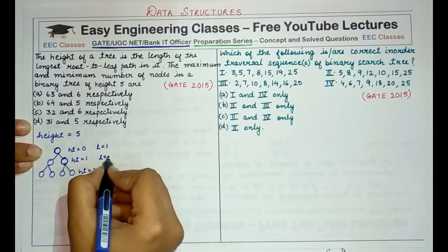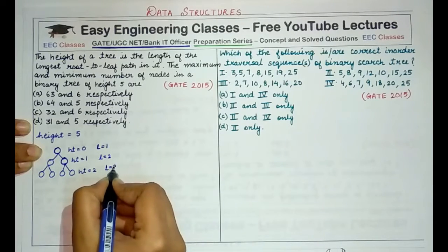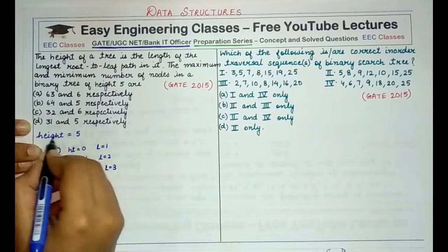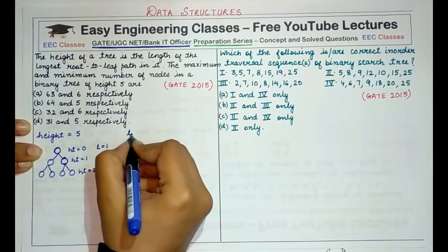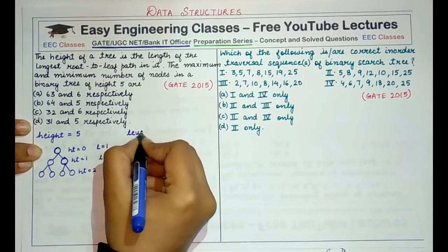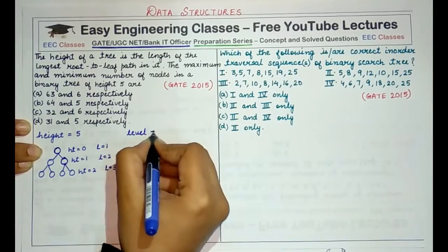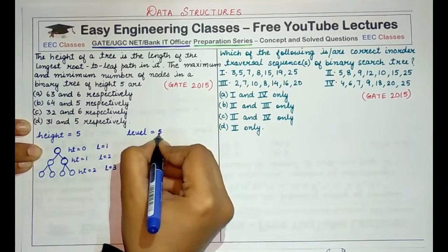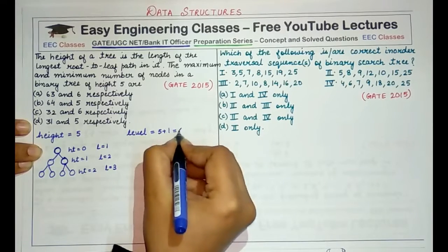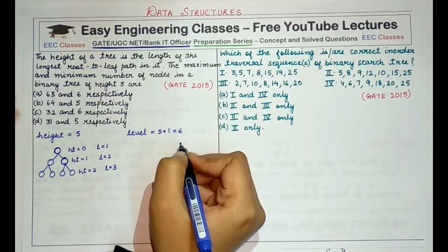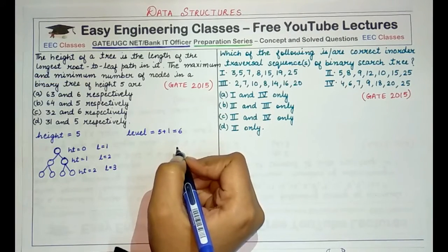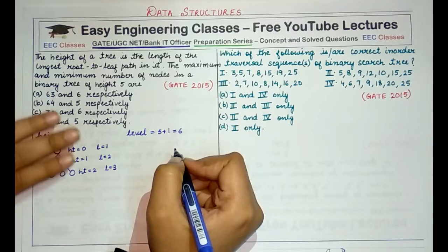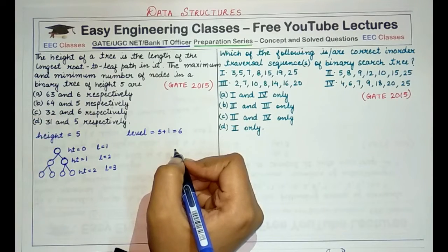Level 2, level 3, and so on. So if we say height of 5, we actually mean level of 5 plus 1, which is 6. So we have to tell what would be the maximum and minimum number of nodes in a binary tree of height 5.